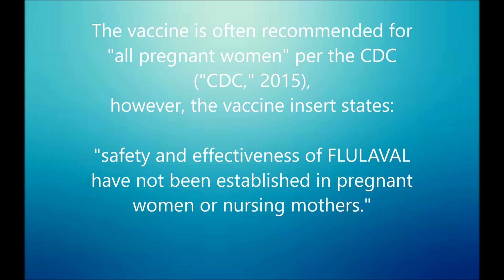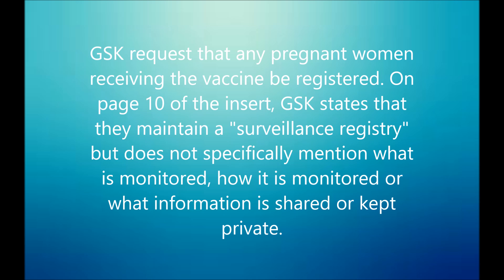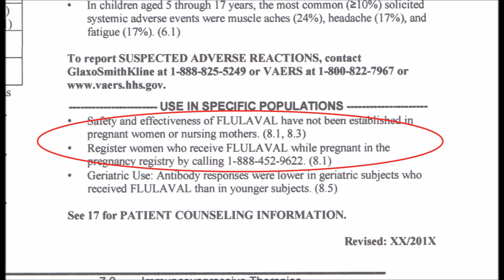Per the CDC, the vaccine is often recommended for all pregnant women. However, the vaccine insert states on page one that safety and effectiveness of flu label have not been established in pregnant women or nursing mothers. GlaxoSmithKline requests that any pregnant women receiving the vaccine be registered with them. On page 10, GlaxoSmithKline states that they maintain a surveillance registry, but does not specifically mention what is monitored, how it is monitored, or what information is shared or kept private. This is a picture of page one showing that statement.